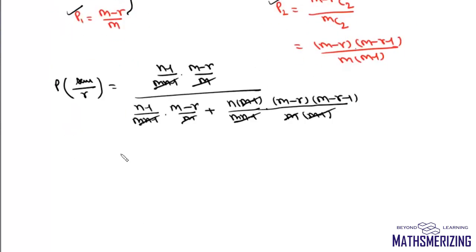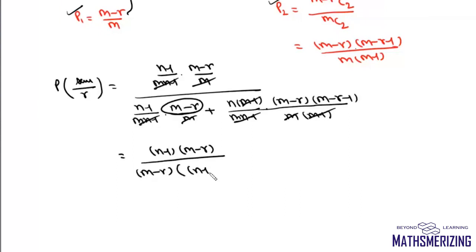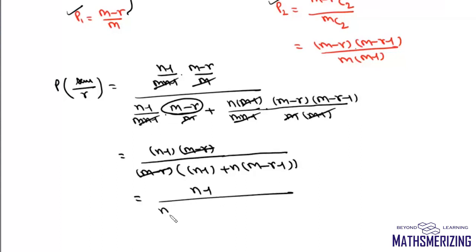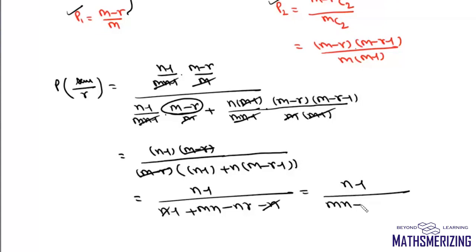After cancellation, the required probability becomes (n-1)(m-r) in the numerator, and the denominator simplifies as: (n-1) + n(m-r-1), where the n terms combine. The final answer is (n-1) / (mn - n - r - 1).